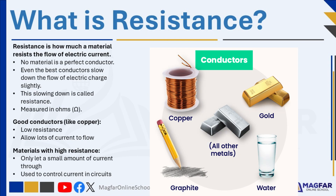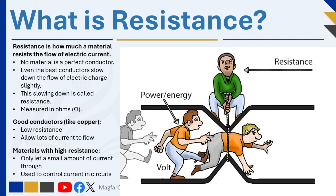In science, we often say that metals are good conductors of electricity, but no material is a perfect conductor. Even the best conductors still slow down the flow of electric charge a little. This slowing down is called resistance. Resistance is the degree to which a material resists or opposes the flow of electric current, and it is measured in ohms.